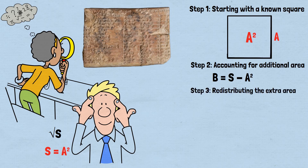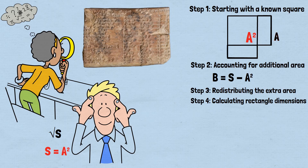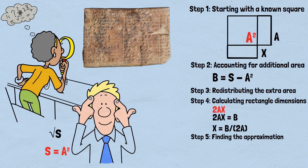Step 3: we can think of this additional area as forming an L-shaped region around our original square. To approximate the new side length, we redistribute this L-shaped area as two rectangles. Step 4: each rectangle has one side of length a. If the other side has length x, then the total area of both rectangles is 2ax. Setting this equal to our additional area: 2ax = b, solving for x: x = b/(2a). Step 5: our approximation for the side length becomes a + x = a + b/(2a).